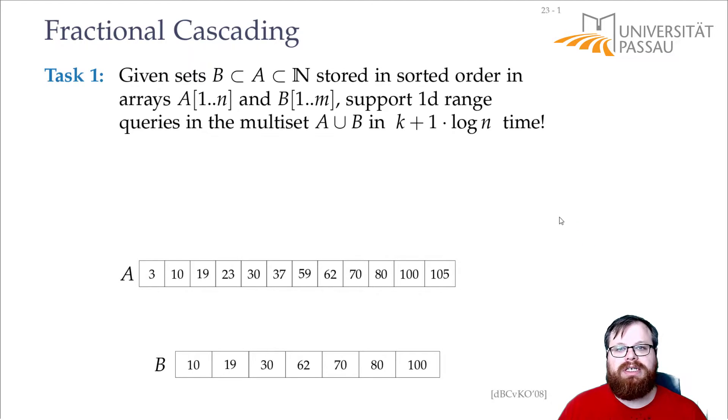Now, what we want to do is we want to support 1D range queries in the multiset in k plus 1 times log n time. Not order of log n time, but exactly 1 times log n. So, we want to report all the elements of A and all the elements of B that lie inside this range.